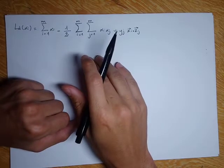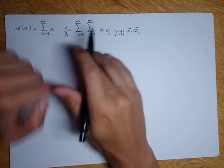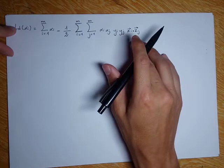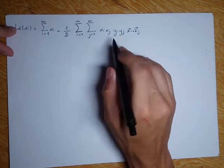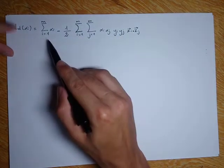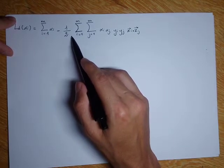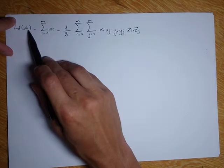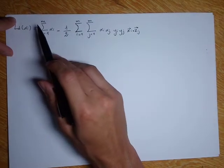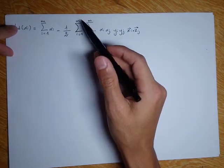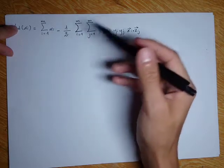In the last video I ended up with this expression, called the dual, and this is going to be used to find the Lagrangian coefficient, in other words alpha sub i, which is this one. When we find this coefficient we will use it to find the w.